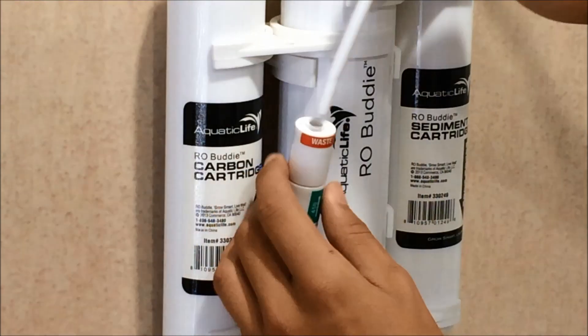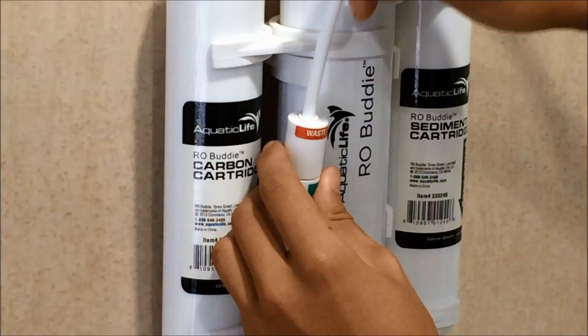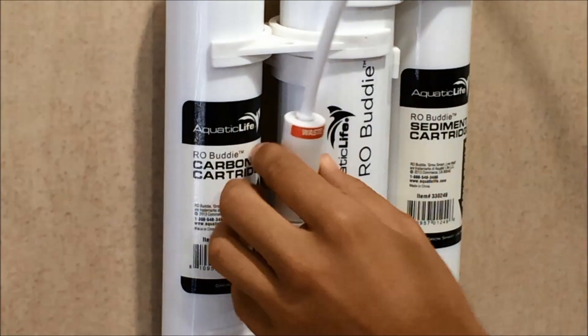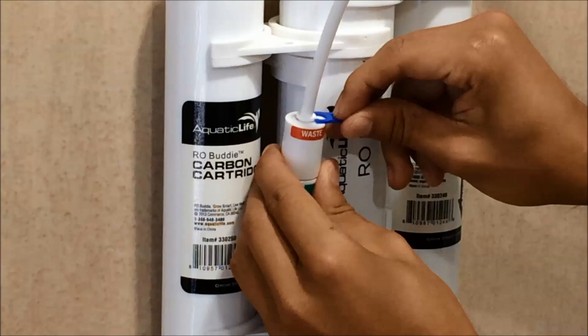The next thing you'll do is insert tubing into the wastewater, and that's at the end of the flow restrictor here, and then you'll replace the blue clip.